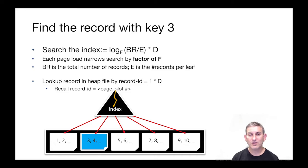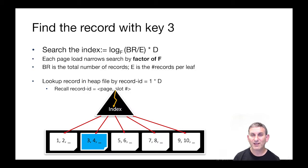Here's a picture of a clustered B+ tree pointing by reference to a heap file in the same order as the tree. To search the index down to the leaf is log base F of (BR/E) — there are BR records total, E records per leaf page, so BR/E leaf pages. Each page load narrows the search by a factor of F. That costs log_F(BR/E) * D IOs. Looking up a record in the heap file by record ID is one additional IO, since a record ID is a page and slot number. So finding the record with a given key costs (log_F(BR/E) + 1) * D.